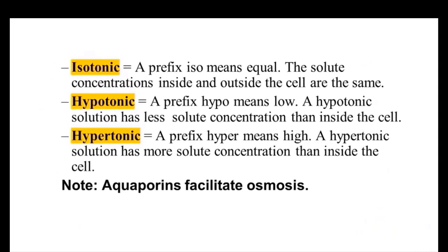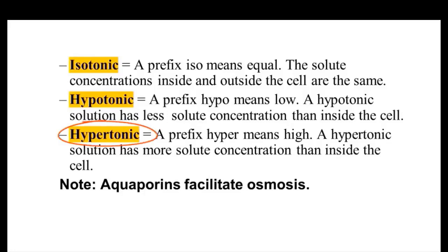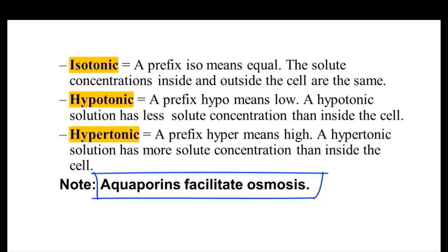I want to introduce three terms: isotonic, hypotonic, and hypertonic. Isotonic means equal — you have the same concentration of solute on both sides. Hypotonic means low — the area you are talking about has less solute concentration. Hypertonic means high — it has more solute concentration. Aquaporins are transmembrane proteins that facilitate the movement of water across the plasma membrane — in other words, they facilitate osmosis.